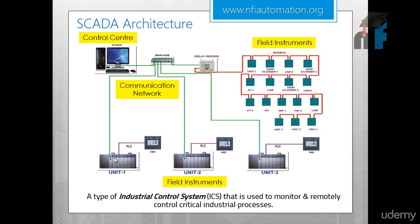An HMI is a human-machine interface that is individually connected to one PLC and independently controls and monitors it. But if you need a control station that can read information from all units, you need a SCADA system — connected to all other units via a main hub. This is the basic architecture of SCADA.